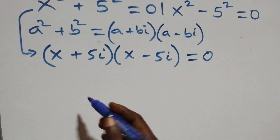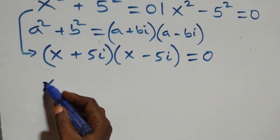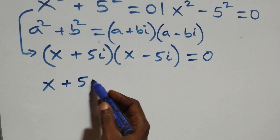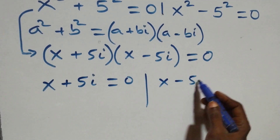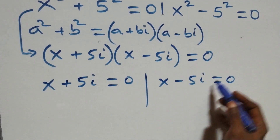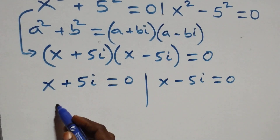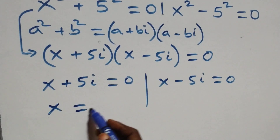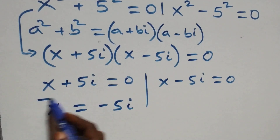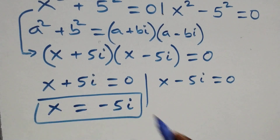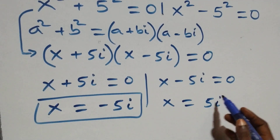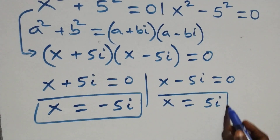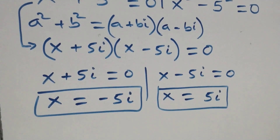The next step here, we have two possible cases: x + 5i equals to 0, or x − 5i equals to 0. Solving gives us x equals to −5i, which is a complex solution, and also x equals to 5i, which is also a complex solution. So we have two complex solutions from here.